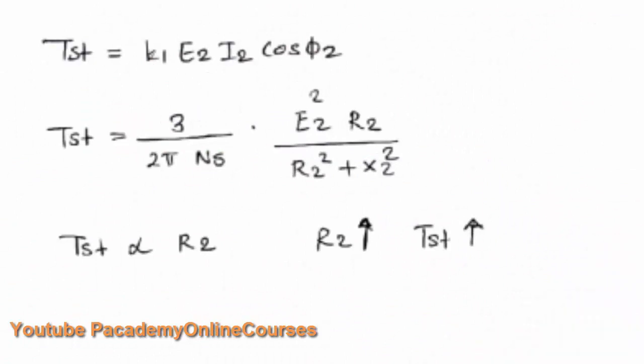The starting torque of the induction machine can be written as K1 × E2 × I2 × cos Phi 2, where the constant K1 is found to be 3 divided by (2π × Ns).